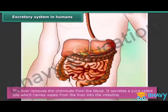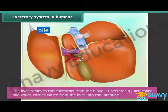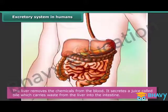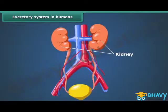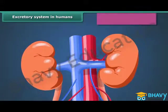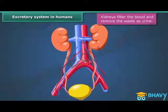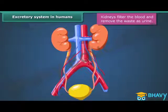The liver removes chemicals from the blood. It secretes a juice called bile, which carries waste from the liver into the intestine. The kidneys are bean-shaped and two in number. They filter blood coming from different parts of the body. During this process, useful substances are absorbed back into the blood and waste is removed as urine.